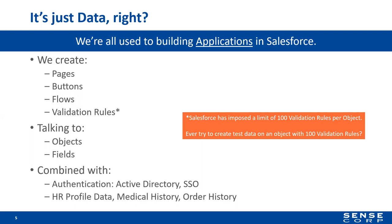Those are well and good — components of every Salesforce project — but you have to be aware that too many of anything can be bad. Salesforce has imposed a limit of 100 validation rules on an object. If your application design calls for 100 validation rules, you've got something you're not handling well. If you've ever tried to create test data on an object that had 100 validation rules, it is a nightmare. Salesforce had to put that validation limit in because somebody tried to do it with 200.